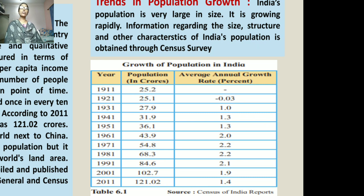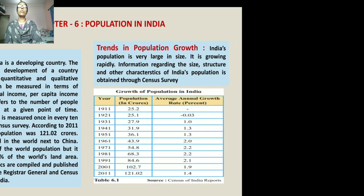In 1921 there was a decrease in population — the growth was negative. The reason for this was an epidemic that occurred in 1921. Due to that epidemic, population growth did not happen. In 1931 the population was 27.9 crore with an annual growth rate of 1 percent. From 1941 to 2011 you can see the numbers keep increasing, and in 2011 India's population reached 121.02 crore.